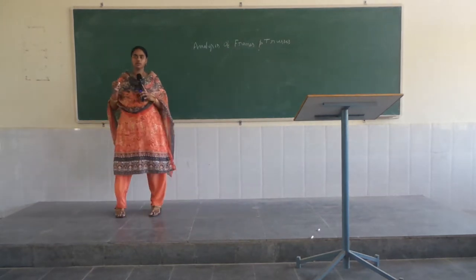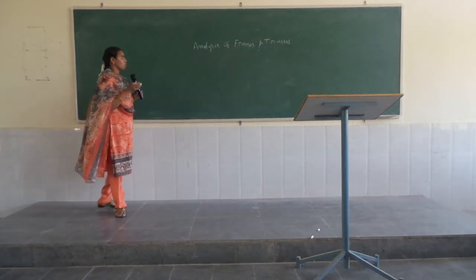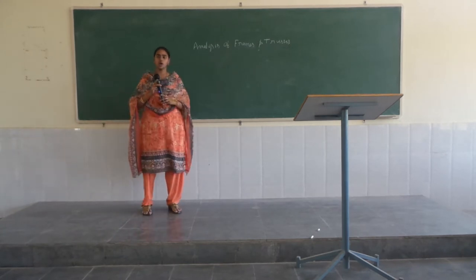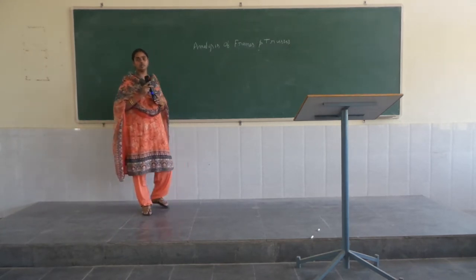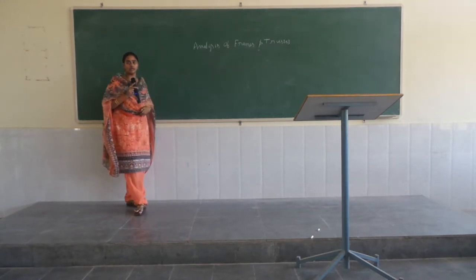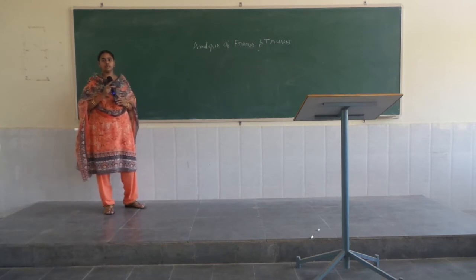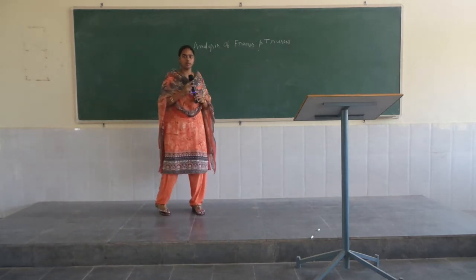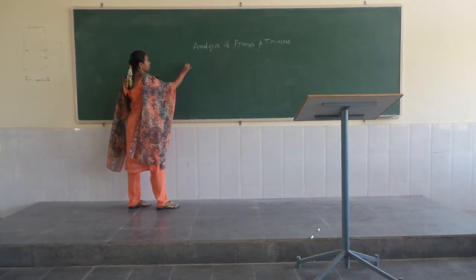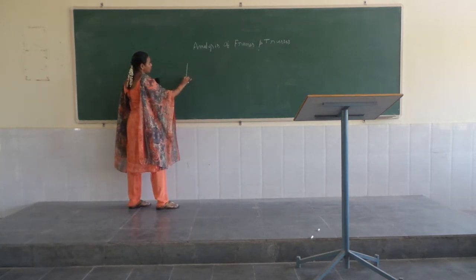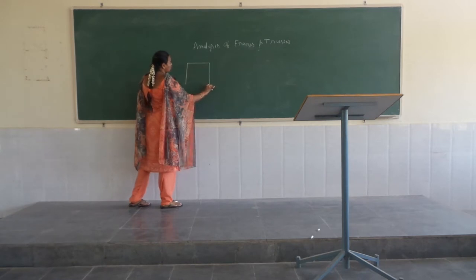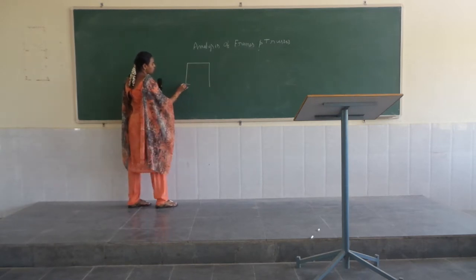Firstly, let me explain about frames. What is meant by a frame? A frame is nothing but a combination of beams and columns. A beam is nothing but a horizontal member and a column is nothing but a vertical member. So let us explain about the frame with an example of a diagram.